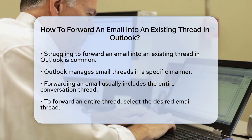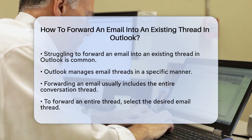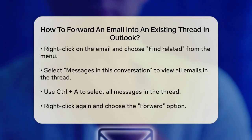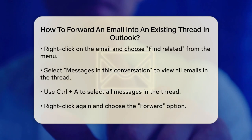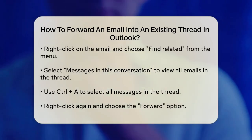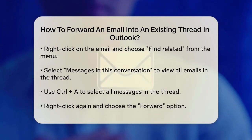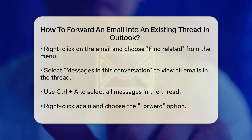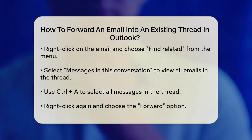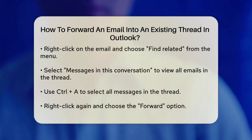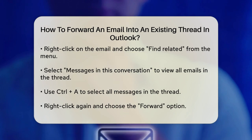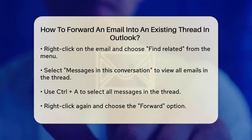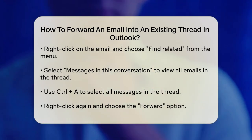start by selecting the email thread you want to forward. Right-click on the email and look for the Find Related option in the menu. Select Messages in this conversation to see all the emails in that thread. Hold down the Control key and press A to select all the messages. Once all messages are selected, right-click again and choose Forward. This will open a new email with all the selected messages attached or included as separate items. You can then enter the recipient's email address and add any additional message before sending.